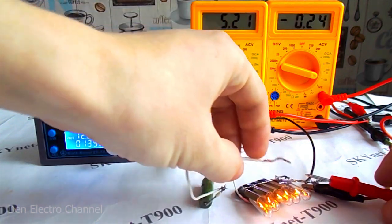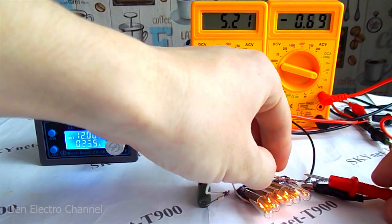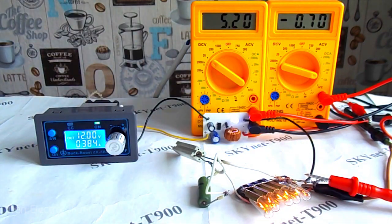I load the converter even more by adding resistance. The voltage at the output of the converter sank a little, and the current strength was 700 milliamps.